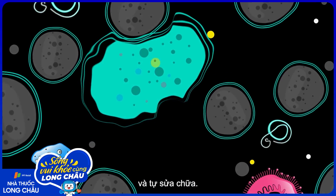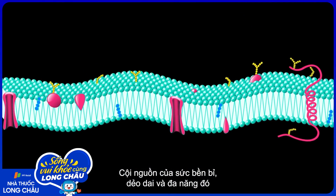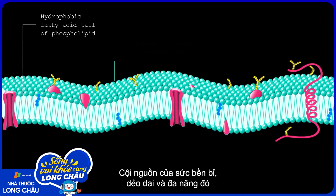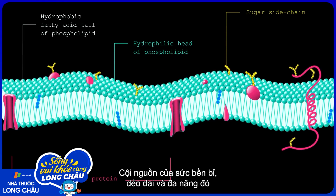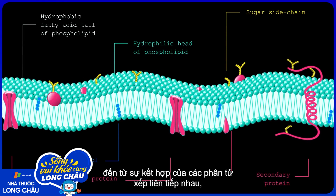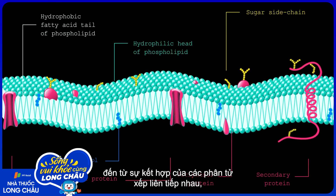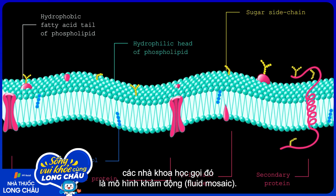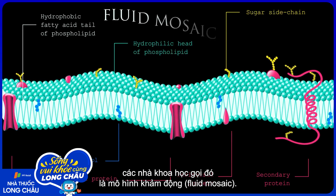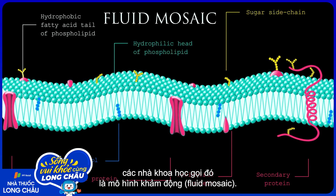The cell membrane gets this resilience, flexibility, and functionality by combining a variety of floating components in what biologists call a fluid mosaic.